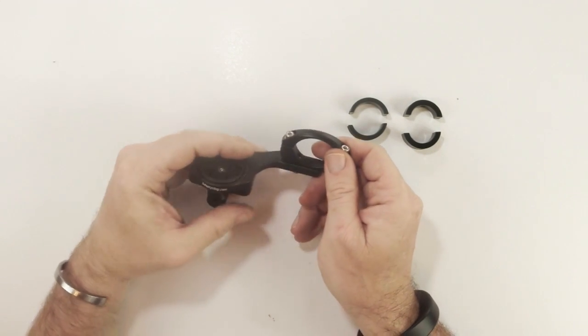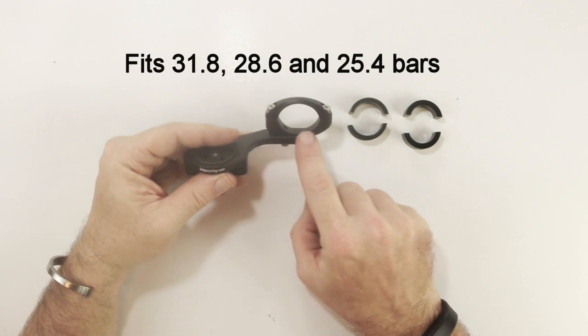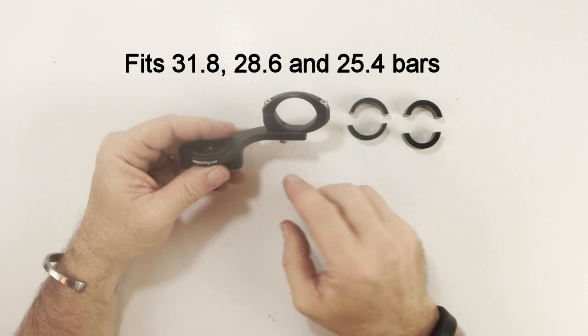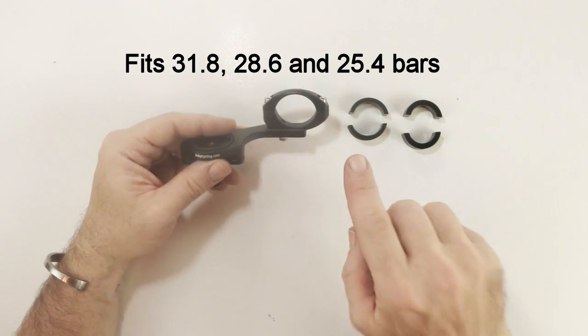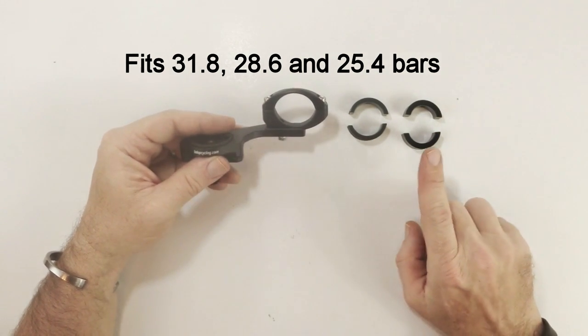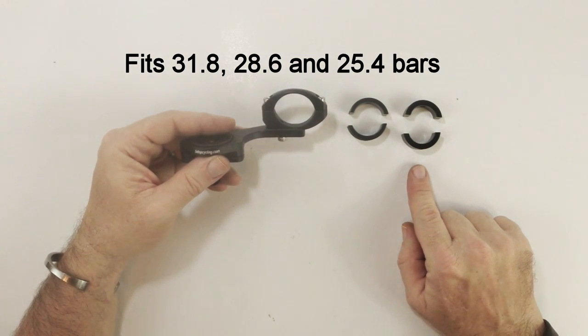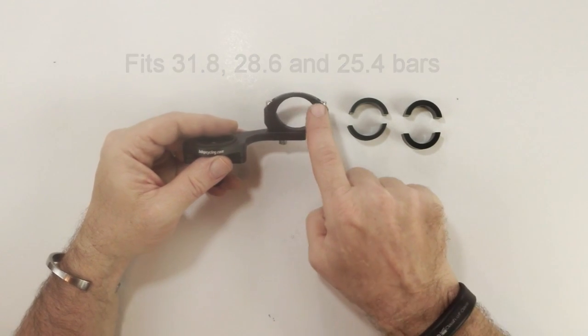This mount is designed for 31.8 bars, which are the standard oversize bars that we see now. However, if you do have a 28.6 or 25.4 bar, we do include these adapters that will just go in here.